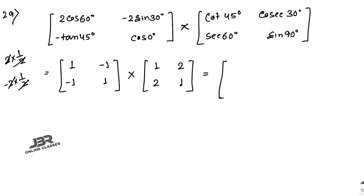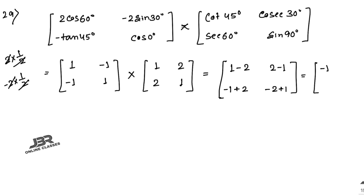Computing the product: first element 1×1 plus (-1)×2 equals minus 1; second element 1×2 plus (-1)×1 equals 1; third element (-1)×1 plus 1×2 equals 1; fourth element (-1)×2 plus 1×1 equals minus 1. So the final answer is the matrix [-1, 1; 1, -1].